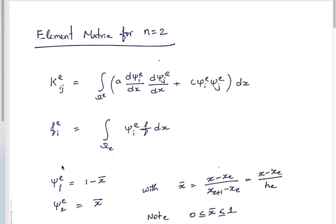To clarify x_bar: in mathematics we often do change of variables to reduce effort. Here x_bar is a local coordinate defined for element e such that as x goes from x_e to x_{e+1}, x_bar goes from 0 to 1. Instead of defining psi_{e1} and psi_{e2} as functions of x, we define them as functions of x_bar — it is simply a change of coordinates.